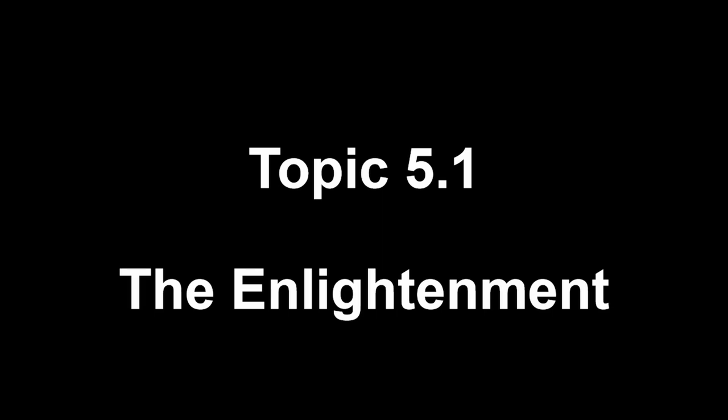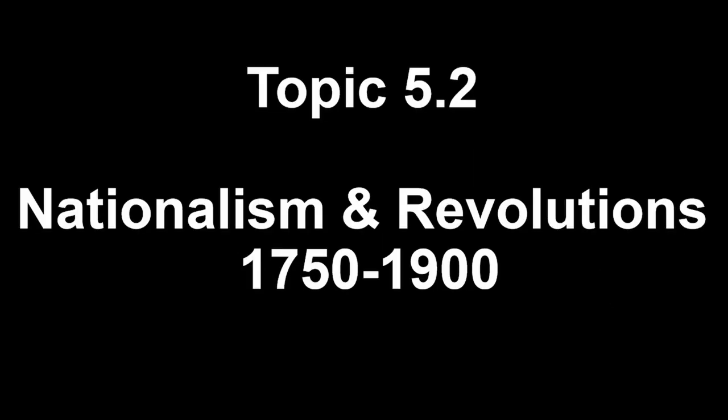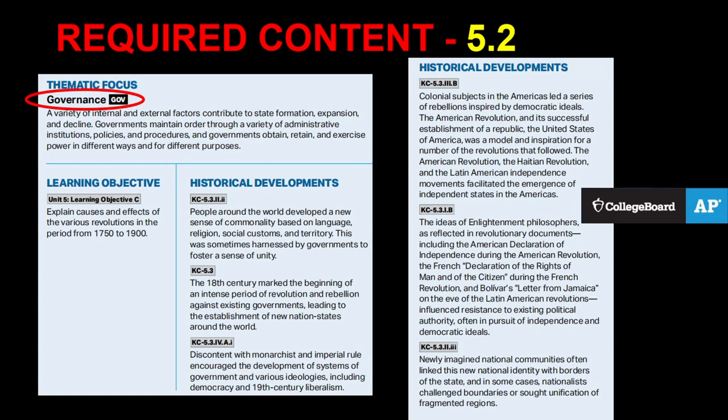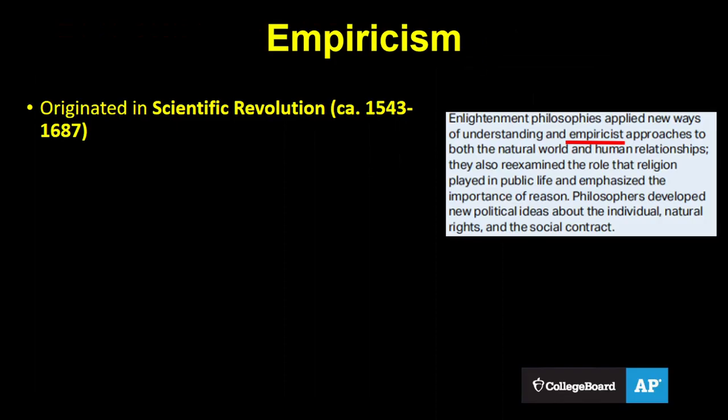Welcome back to the world of Eicherd, where we think like the College Board. Today we're looking at 5.1, the Enlightenment, and 5.2, Nationalism and Revolutions. 5.1 focuses on culture and society, while 5.2 focuses on governance.